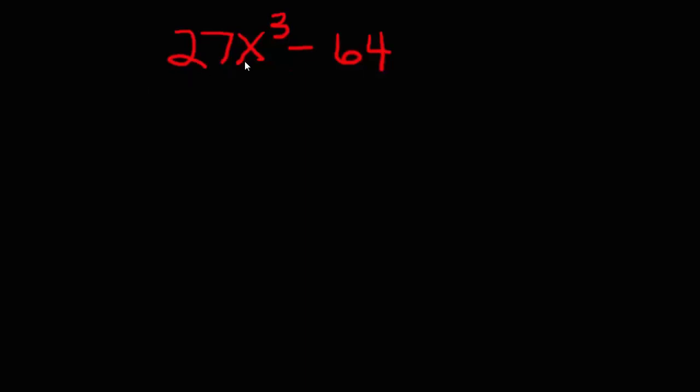So 27x cubed and 64 all are perfect cubes. So we do that by creating a binomial, that's two terms, and a trinomial. So we factor into a binomial times a trinomial and we apply some rules.